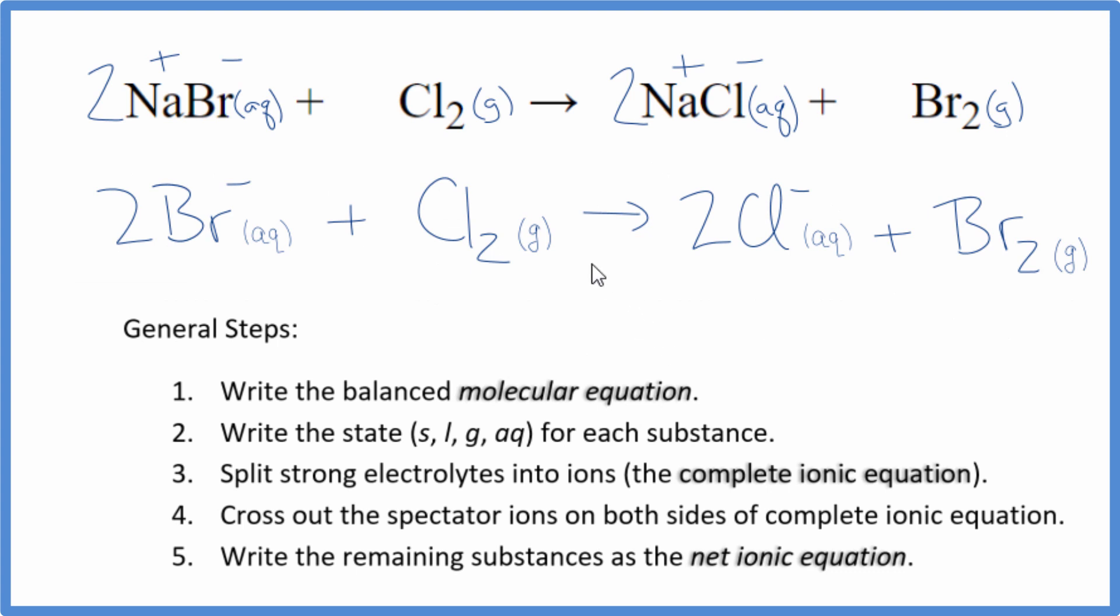So this is the balanced net ionic equation for sodium bromide plus chlorine gas. You'll note charge is conserved. We have two times the one minus, so two minus over here, two times the one minus. We have two minus on the product side. That's balanced. And if you count the atoms up, they're balanced as well.